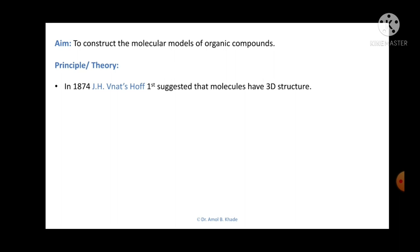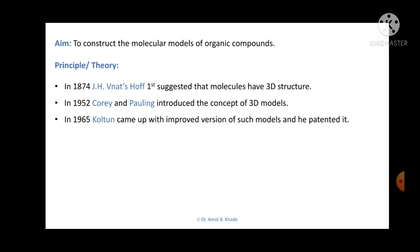In the year 1874, J. H. van't Hoff was the first person who suggested that molecules have a 3D structure. Then in the year 1952, Corey and Pauling introduced the concept of 3D models. This concept was then taken up by Koltun, and in the year 1965 he came up with an improved version of such 3D models for organic compounds, which he patented. Thereafter, several types of kits became available in the market, ranging from a few thousands to even lakhs.